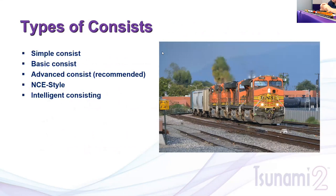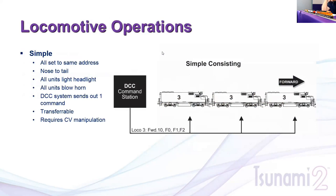Once everything is set up, let's build our consists. There are five types of consisting in model railroading: simple consist, basic advanced consist (which we highly recommend), NCE style (a hybrid), SoundTraxx intelligent consisting, and we'll explain each. First, let's illustrate physically what's going on behind the scenes when you build the different types.